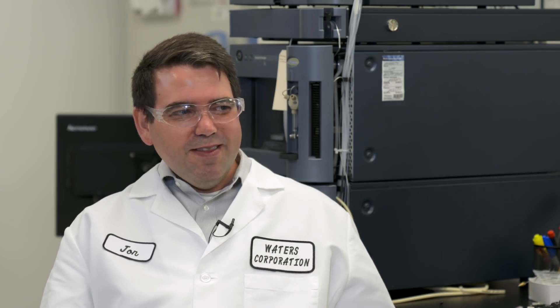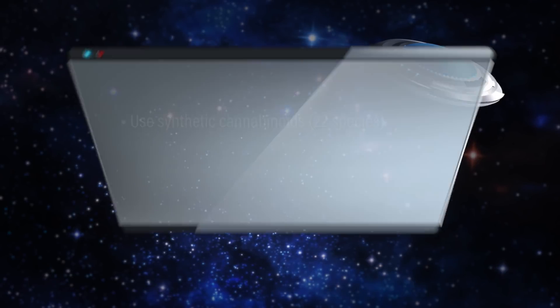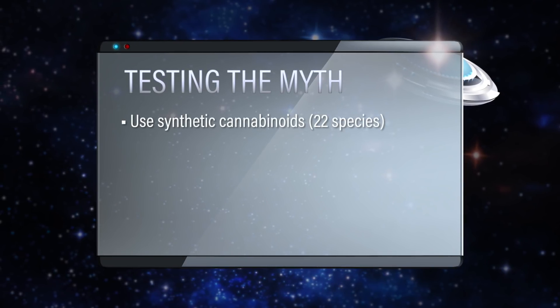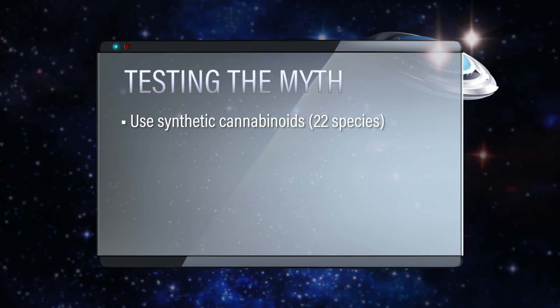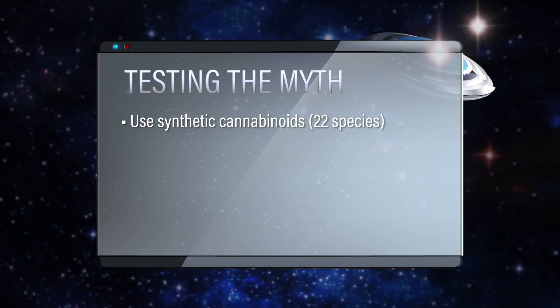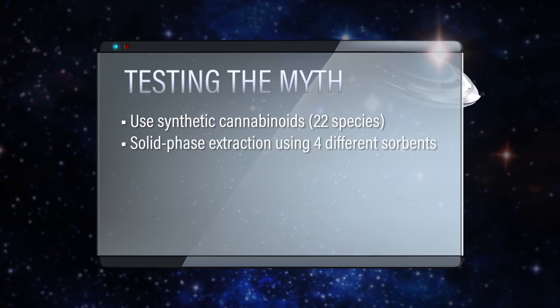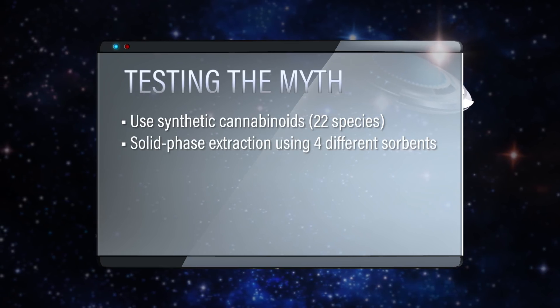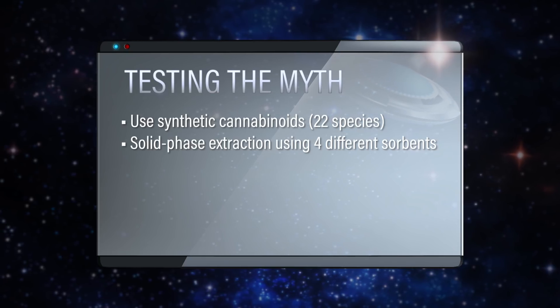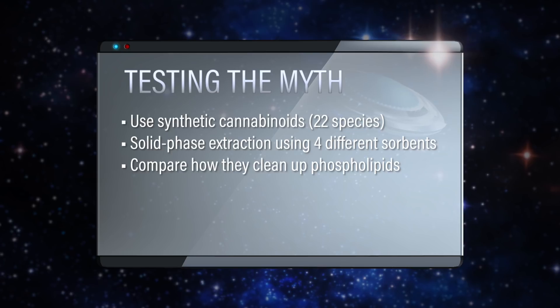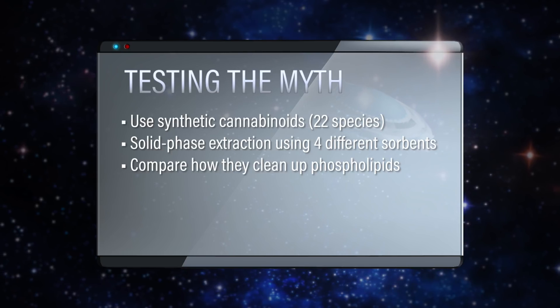I don't feel great about just leaving the customer hanging, so maybe we can extend this experiment a little further — this calls for bonus time. I've got the perfect sample: synthetic cannabinoids, 22 species in this sample mix, and the matrix is whole blood — a really challenging complex mixture and a tough matrix. Since we're going to do whole blood, let's really go after cleaning up this sample. Let's do solid phase extraction and use four different sorbents to see how they compare in performance, specifically how they do with cleaning up phospholipids.